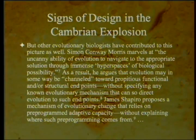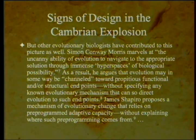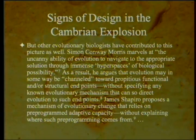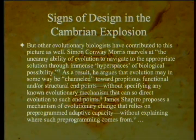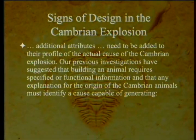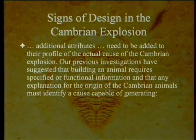Other evolutionary biologists have contributed to this picture as well. Simon Conway Morris marvels at the uncanny ability of evolution to navigate to the appropriate solution through immense hyperspaces of biological possibility, arguing that evolution may in some way be channeled toward propitious functional or structural endpoints, without specifying any known evolutionary mechanism that can direct evolution to such endpoints. James Shapiro proposes a mechanism of evolutionary change that relies on pre-programmed adaptive capacity, without explaining where such pre-programming came from. Additional attributes must be added to this profile: building an animal requires specified or functional information, and any explanation must identify a cause capable of generating digital information, structural or epigenetic information, and functionally integrated and hierarchically organized layers of information.